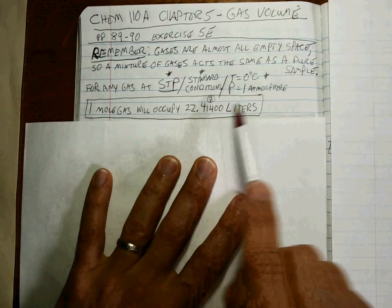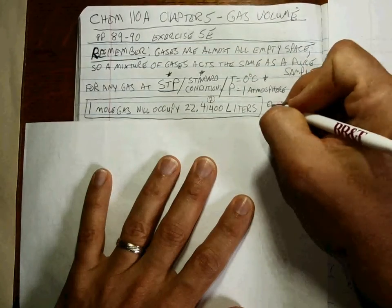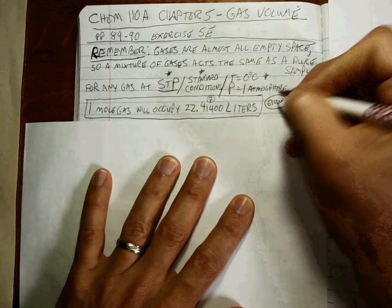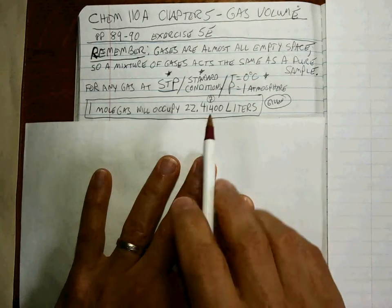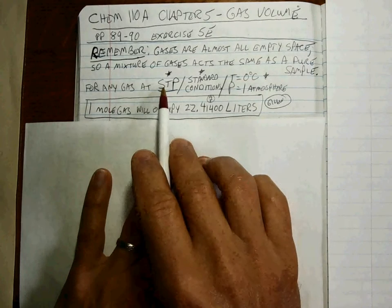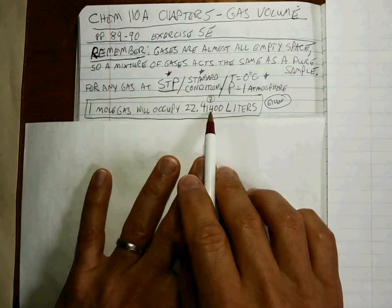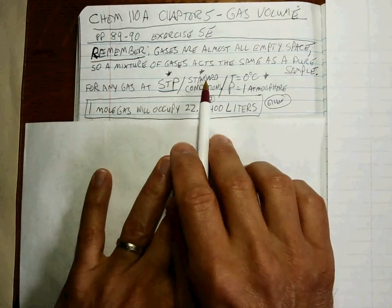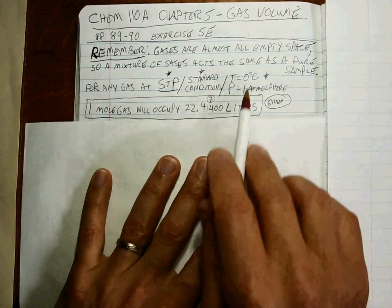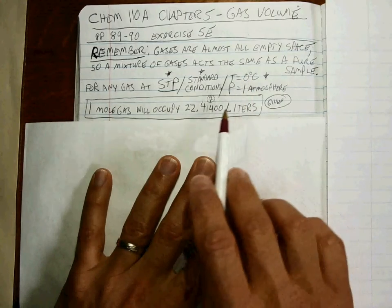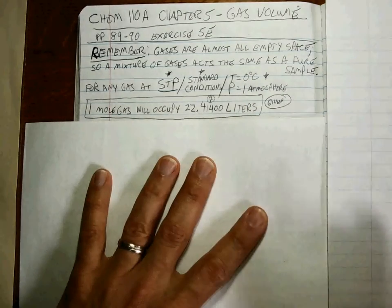Seven sig figs. This is given — okay, on the conversion sheet. And it's sort of automatic. If you see STP, you're going to use this. If you see standard, you're going to use this. If you see those conditions and you know you have a gas, you're going to use this conversion factor.